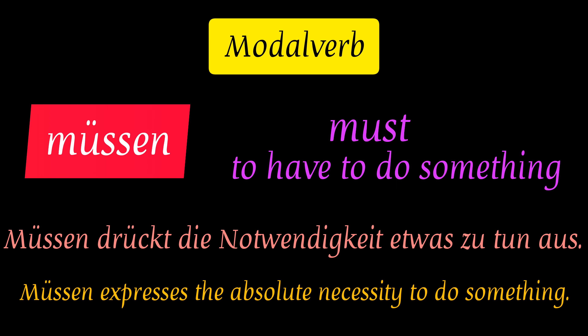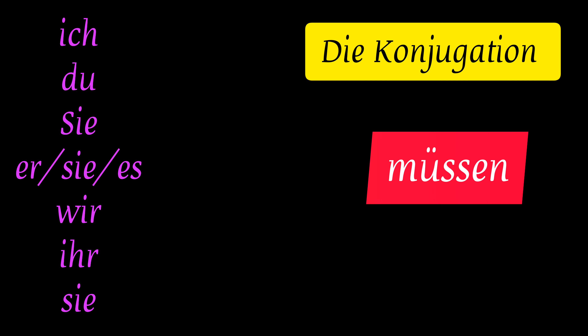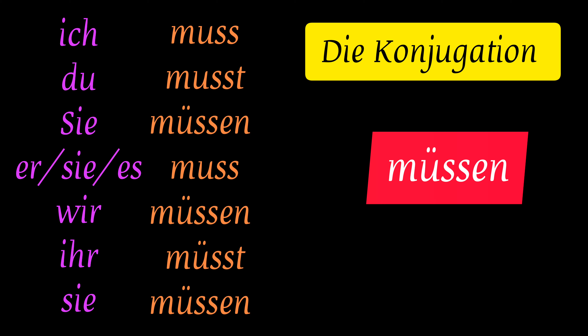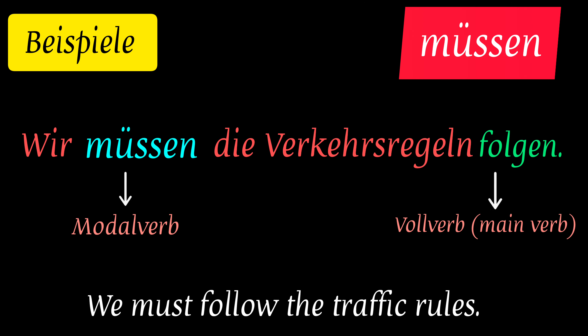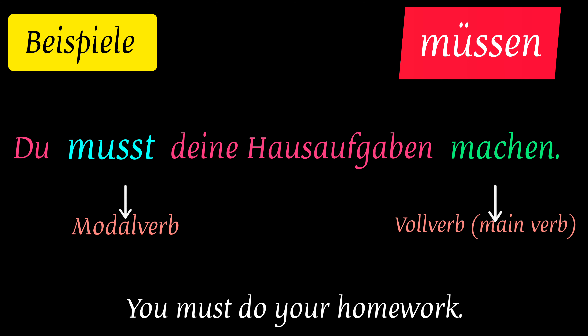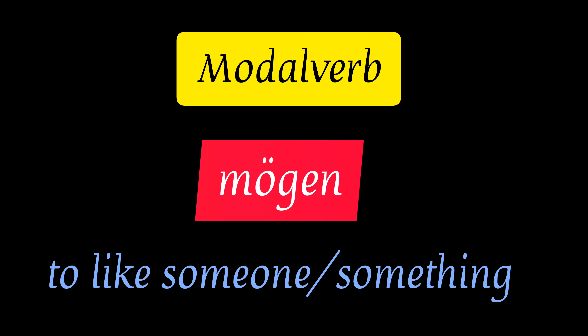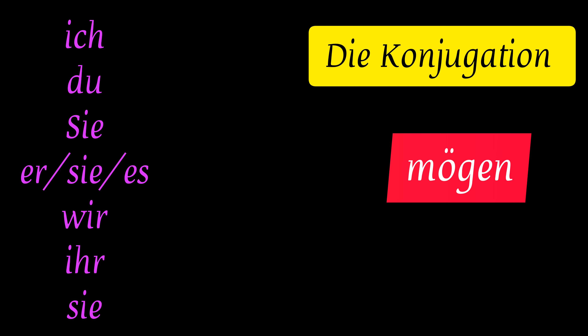The next modal verb is müssen, which means 'must' in English — to have to do something. This verb expresses absolute necessity. Conjugation: ich muss, du musst, Sie müssen, er/sie/es muss, wir müssen, ihr müsst, Sie müssen. Examples: 'Wir müssen die Verkehrsregeln folgen' and 'Du musst deine Hausaufgabe machen.'